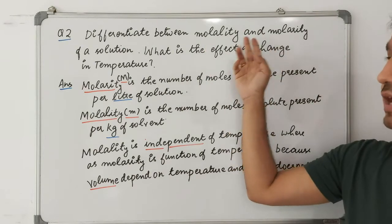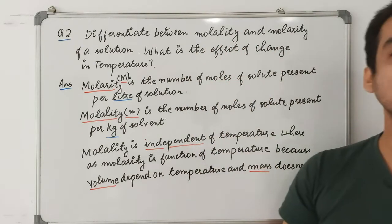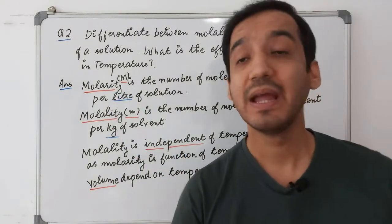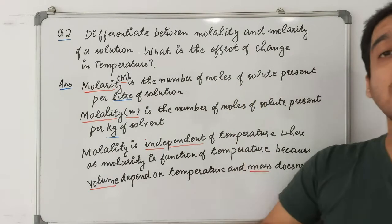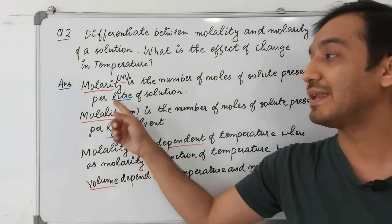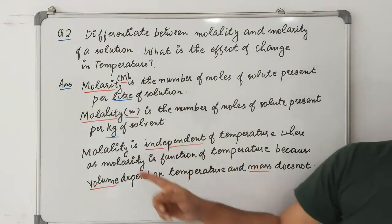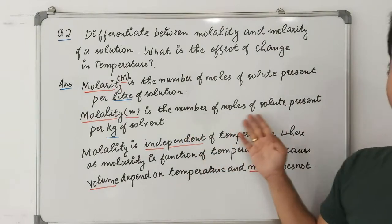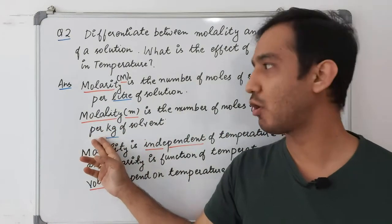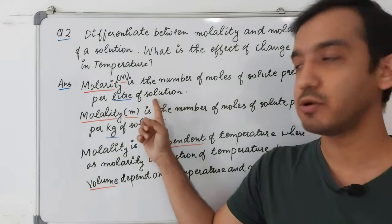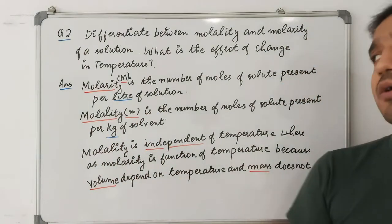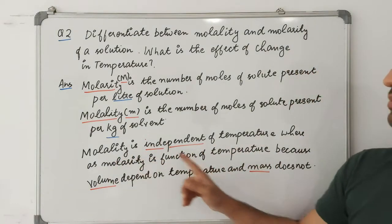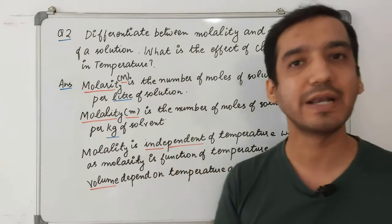Question 2: Differentiate between molarity and molality of a solution and the effect of temperature on both. Molarity is given by capital M and is defined as the number of moles of solute per one liter of solution. Molality is denoted by small m and equals the number of moles of solute per one kg of solvent.